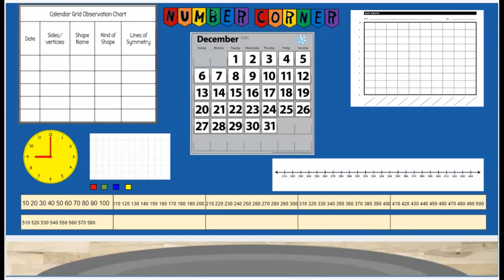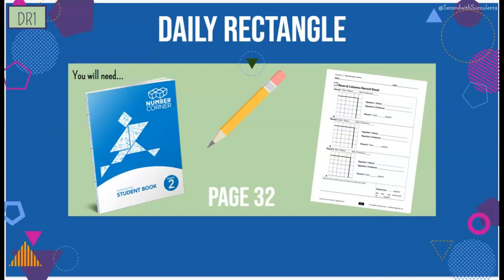Hello, second grade friends, and welcome to Number Corner. For Number Corner today, we are going to be finishing the game of rows and columns that we started the other day. So let's get out what we need right away. You will need your Number Corner book, blue on top, white on the bottom. We have a pencil, and we're opening up to page 32, the rows and columns record sheet. You should already have round one filled in. Let's get back to our record sheets, to our game, but you can pause the video now if you need to get your supplies.